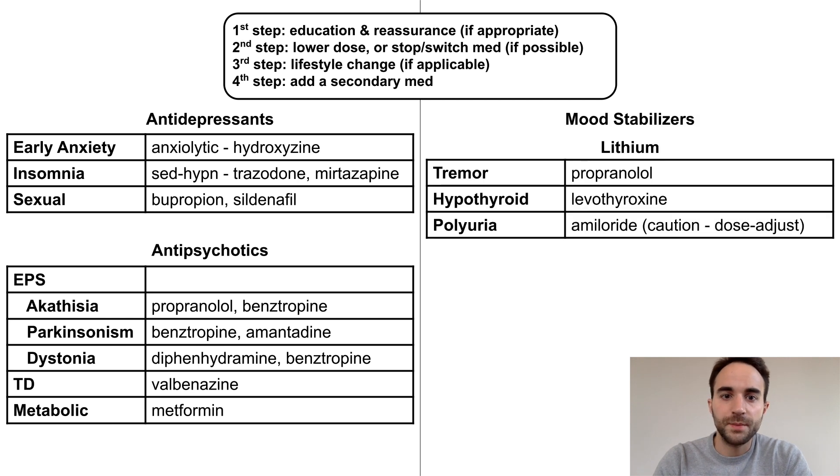For lithium, tremors can be treated with propranolol, hypothyroidism with levothyroxine, and polyuria with amiloride. Though be aware that you may need to adjust lithium's dose after this, as diuretics can alter serum lithium levels.